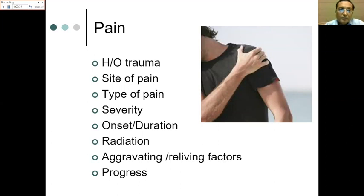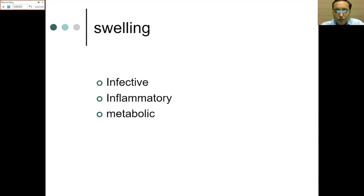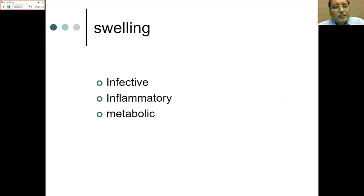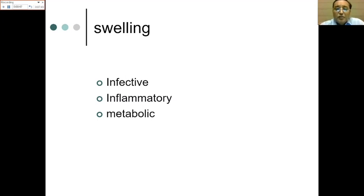For swelling, we apply the same headings — how it started, its course, whether associated with stiffness or fever. If the slightest movement causes pain along with swelling, we think of infective pathology. Bacterial infection is a differential. Insidious onset with low-grade fever and weight loss points toward tubercular or chronic inflammatory pathology, which presents with pain but not much fever.